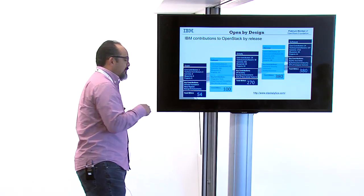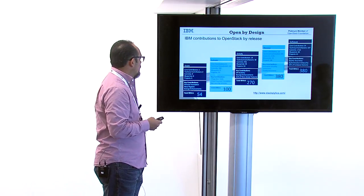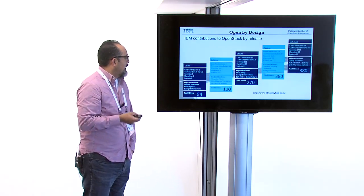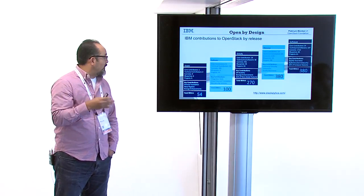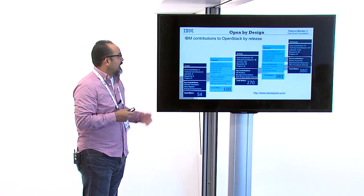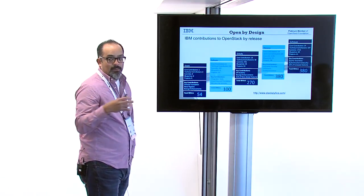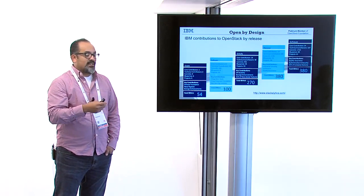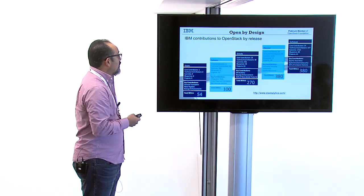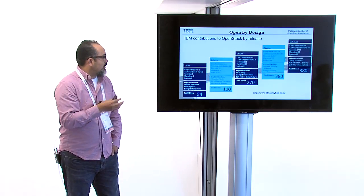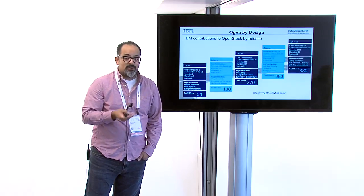From Essex, where the big contributions were storage enhancements and translation — we've always been part of the Cinder work — we had 54 contributors. At Folsom, we almost doubled that, continued the Cinder work, and grew from one to four core contributors with commits growing steadily. At Grizzly, we really started picking up momentum, going up to 270 total IBMers. Commits jumped way up from 181 to almost 1,000 — with contributions to Nova design features and API stability.